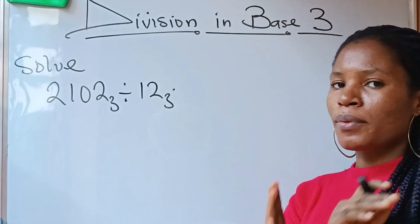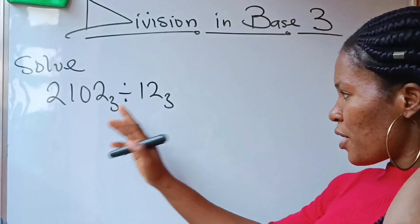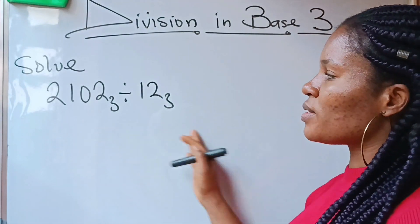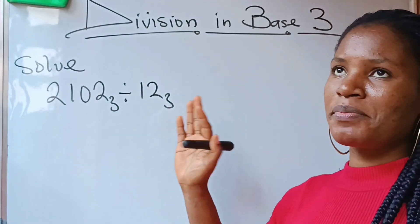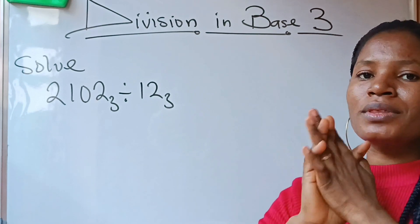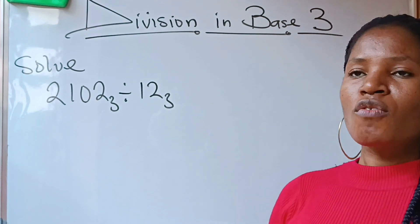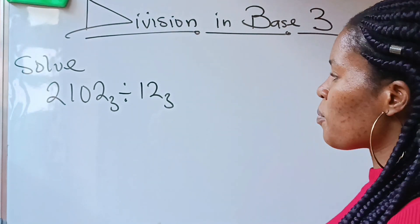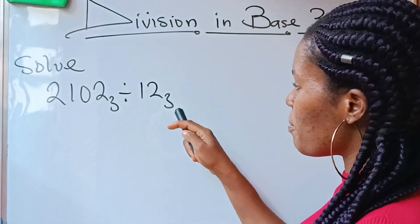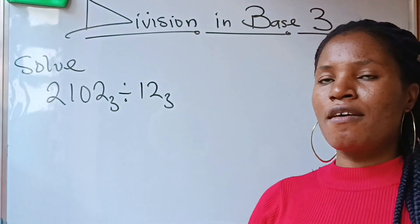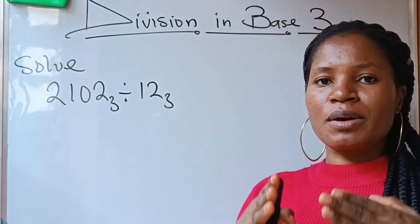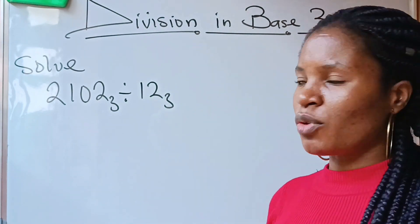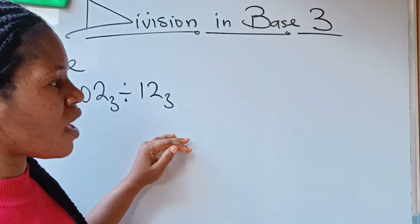When you have anything you want to divide that is not in base 10, you need to form a times table for that particular base you are working with. For example, we are working with base 3, and we have 12 in base 3 — so we need to form a times table of 12 in base 3.